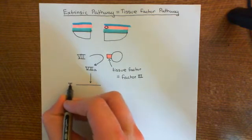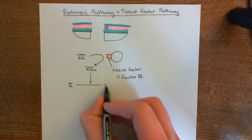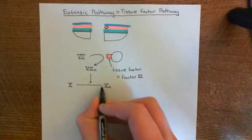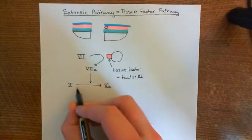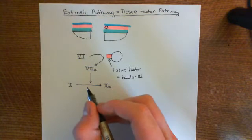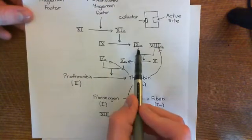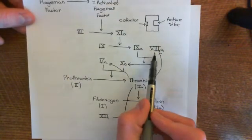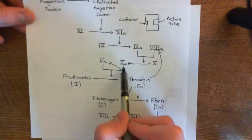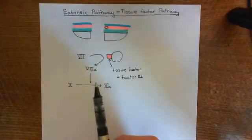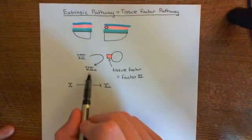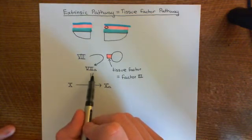Then 7a is going to convert factor 10 to 10a. Coagulation factor 10 is another factor within the blood. We've already seen this happen in the intrinsic coagulation cascade, where 9a along with its cofactor 8a activated 10 to 10a. Factor 7a also does this, but it does it without a cofactor.